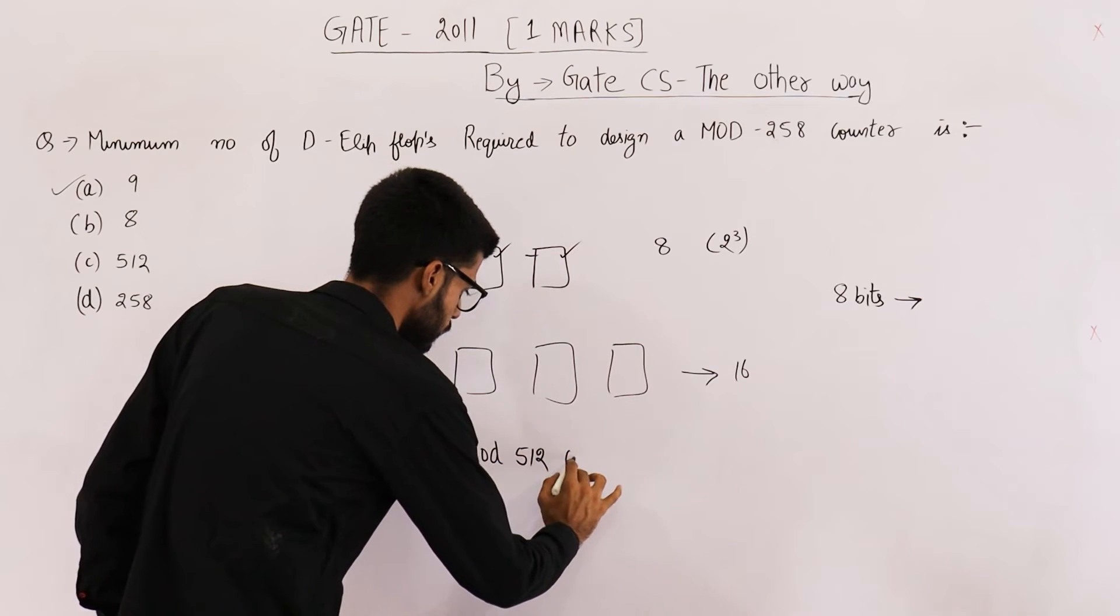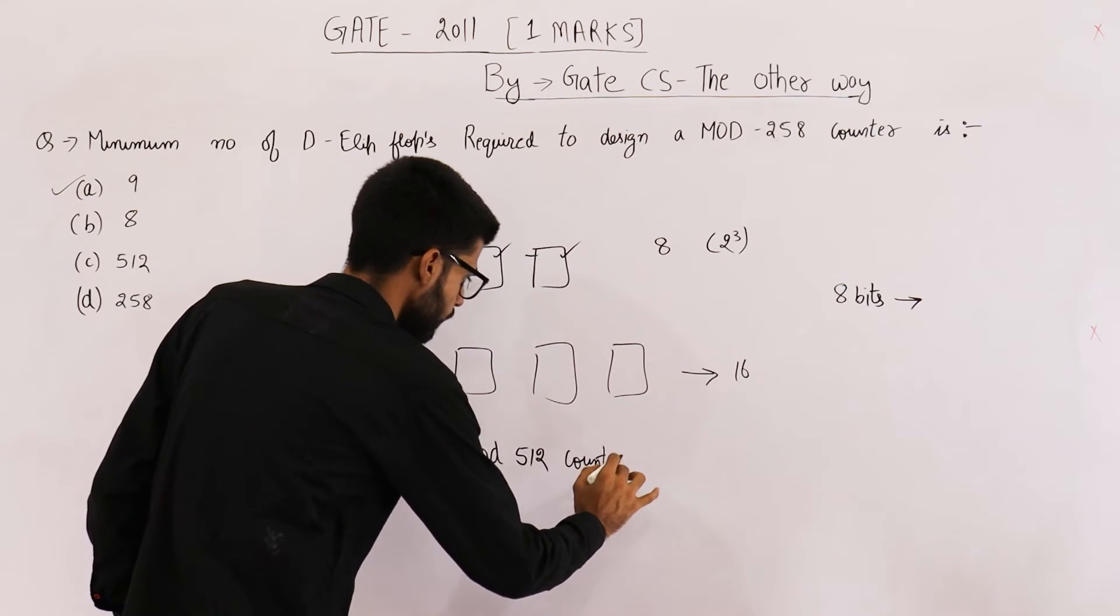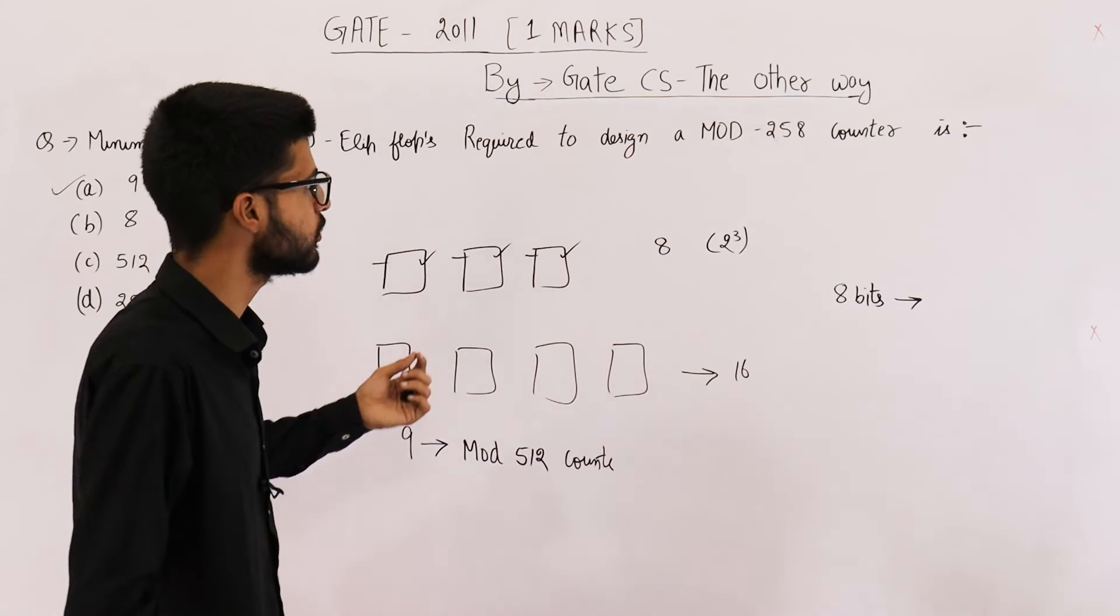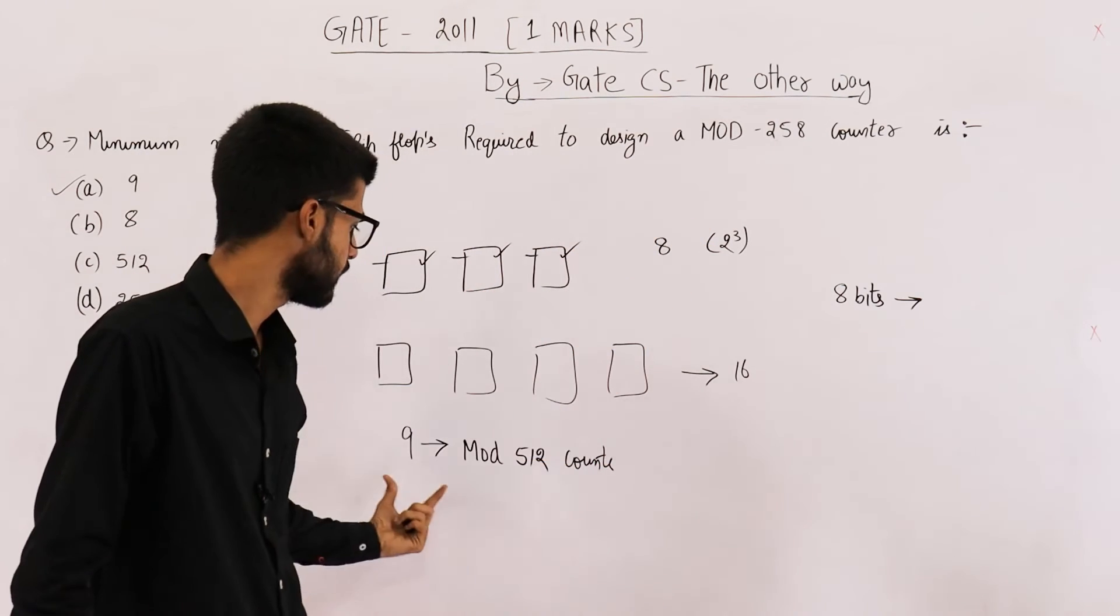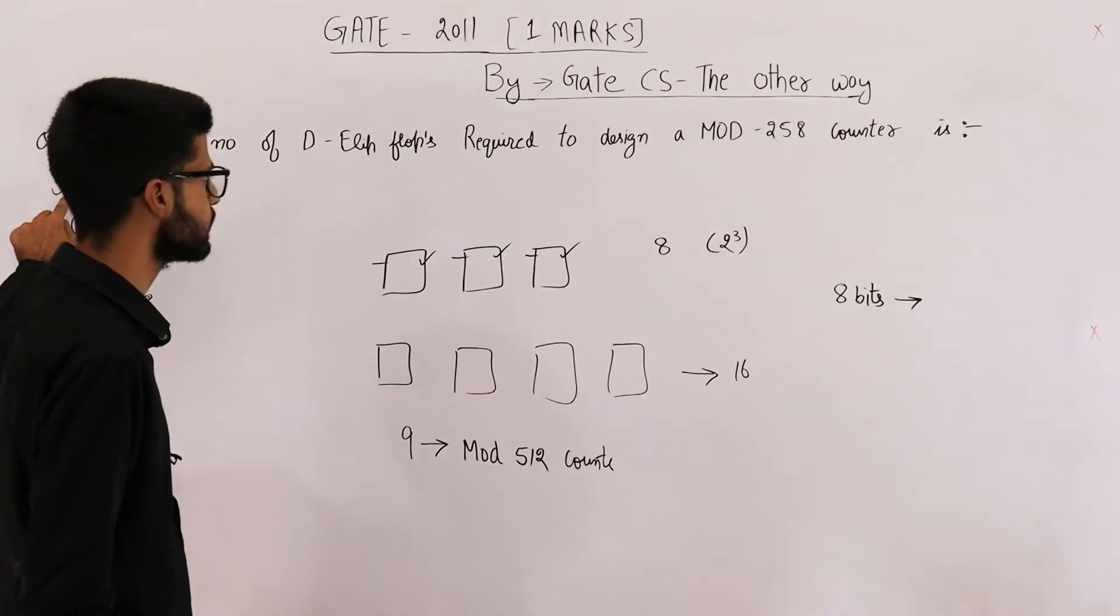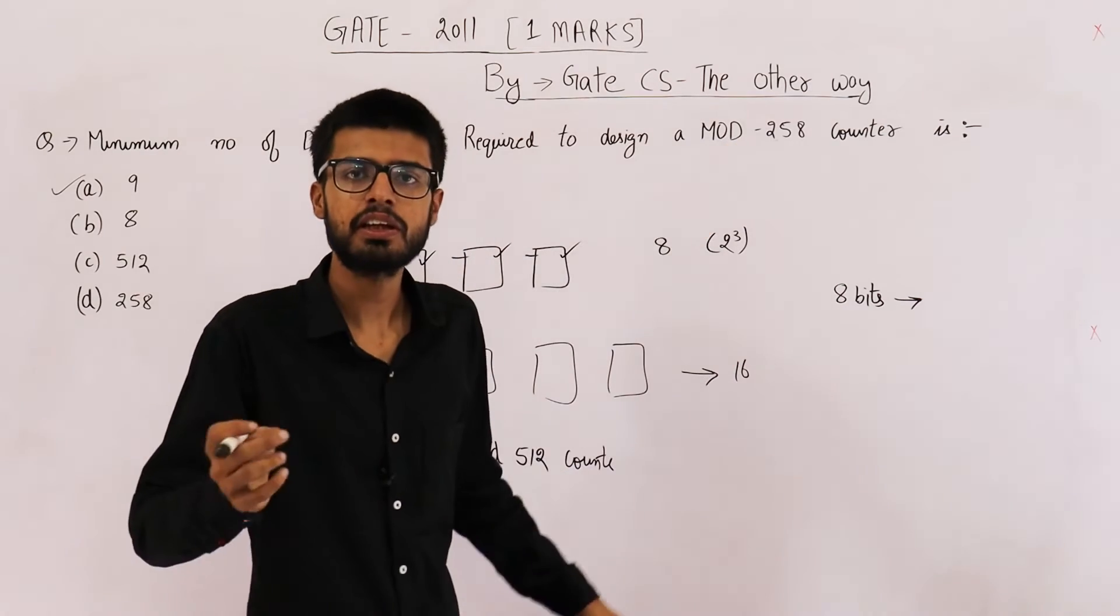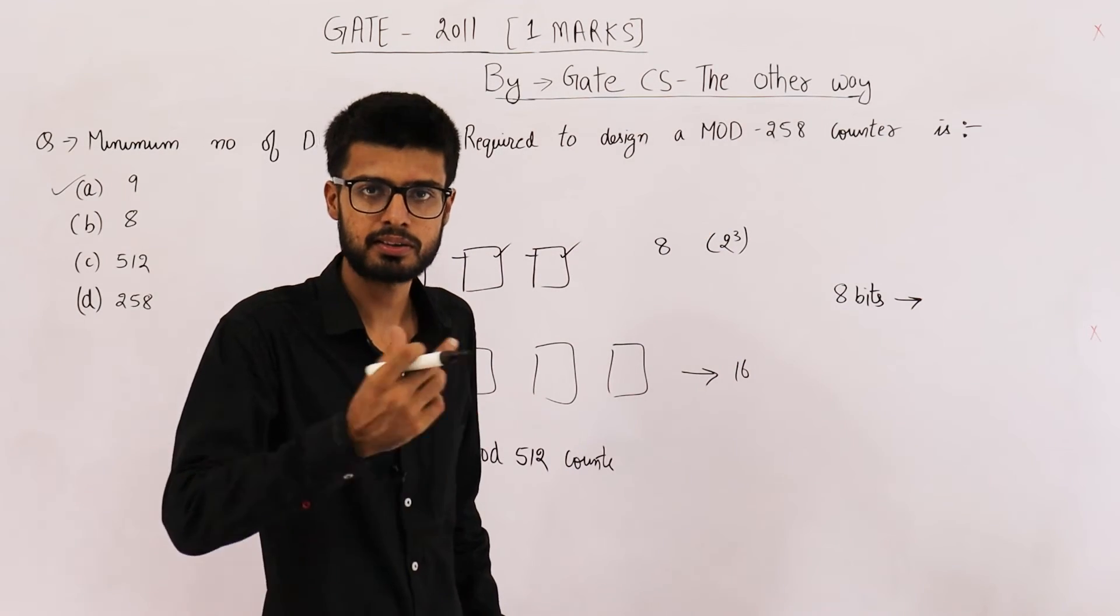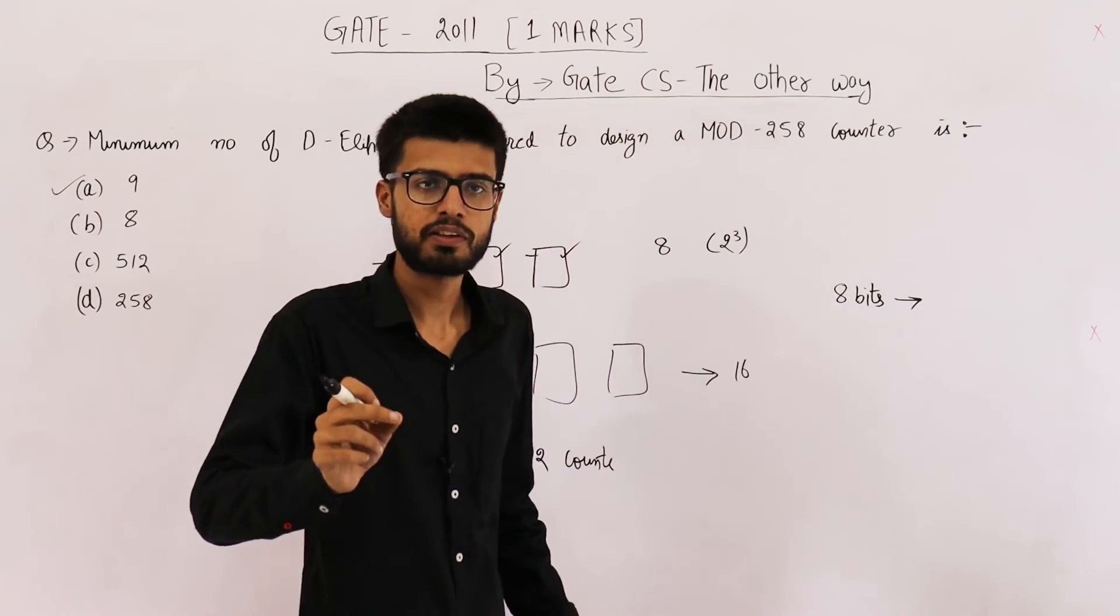With 9 bits we can actually design a mod 512 counter. With 8 bits it is mod 256, with 9 bits in best case it is mod 512. Anyway, the answer is 9, because even if we need one more state, one more than 256, we'll have to increase bits from 8 to 9.